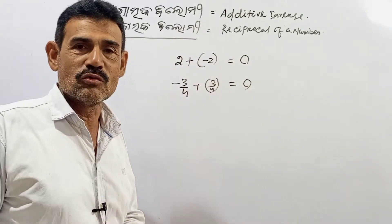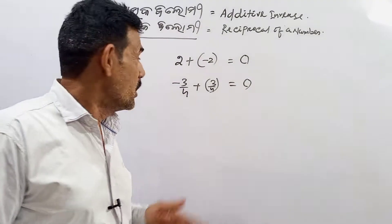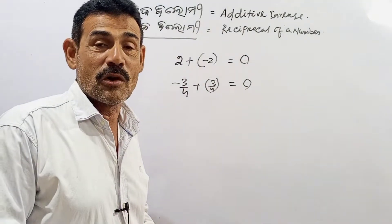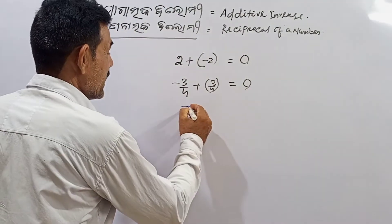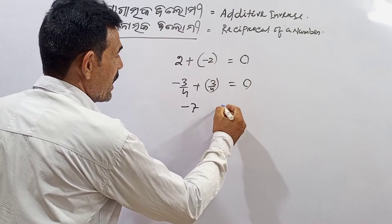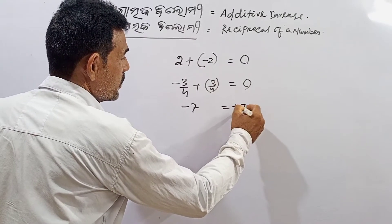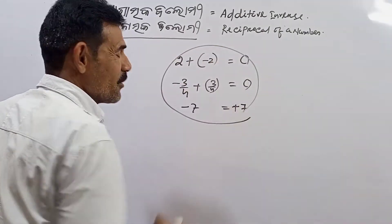Plus 2 becomes minus 2. Minus 2 becomes plus 2. Minus 3 by 4 becomes plus 3 by 4.